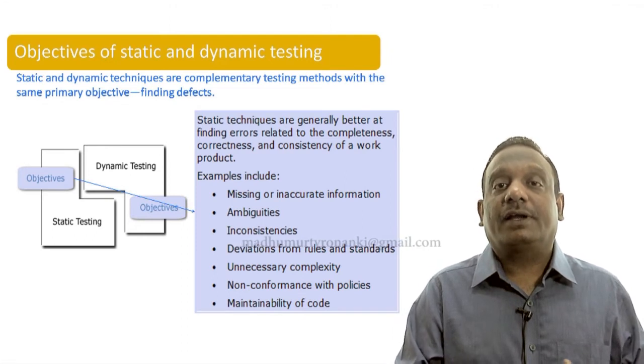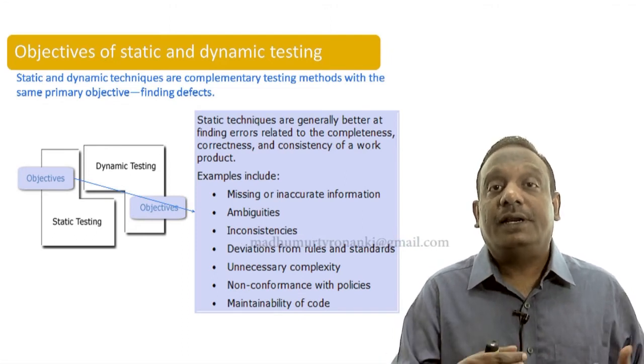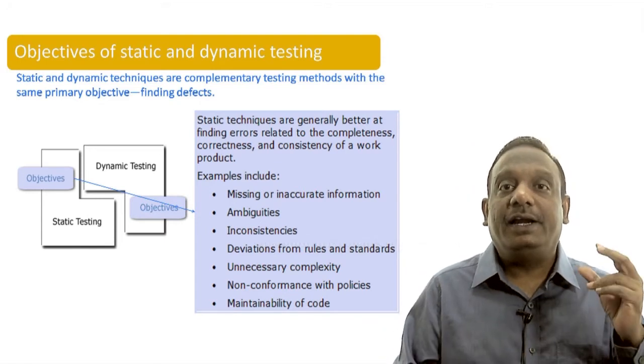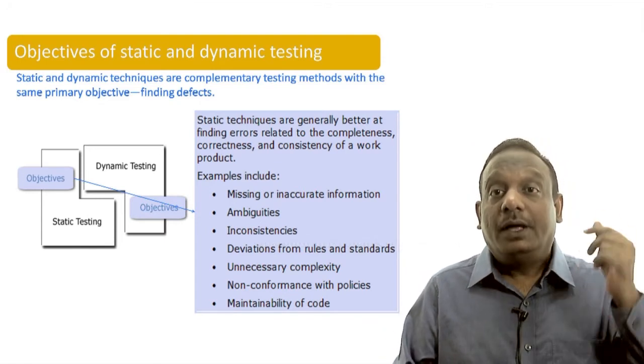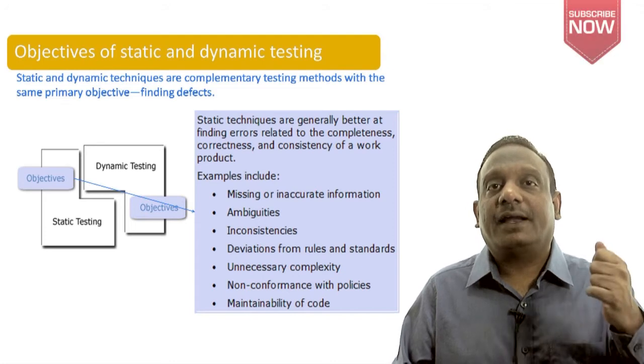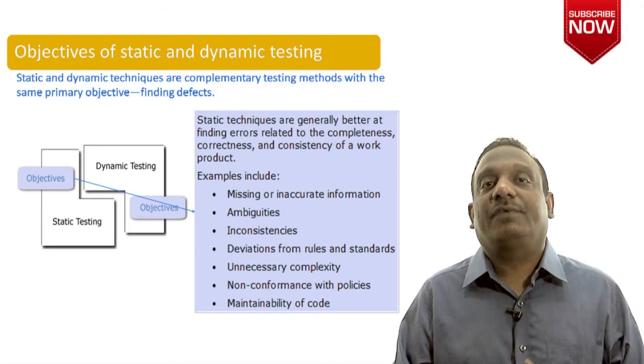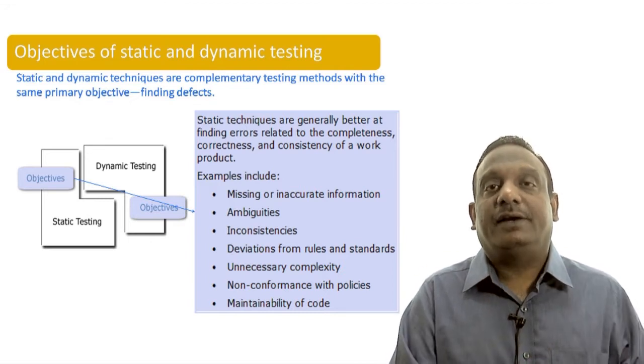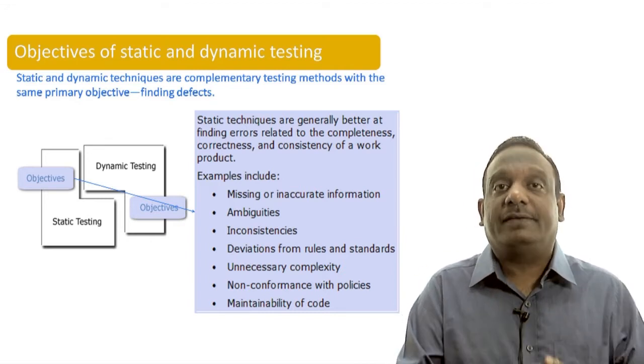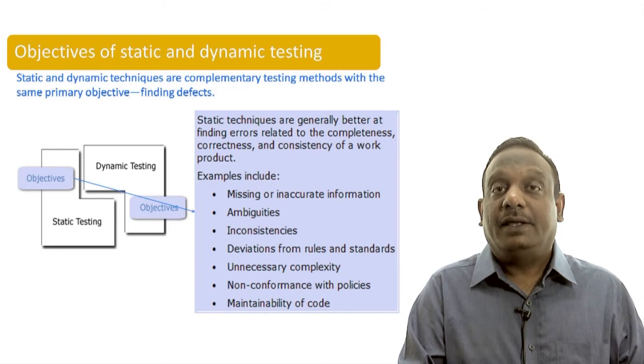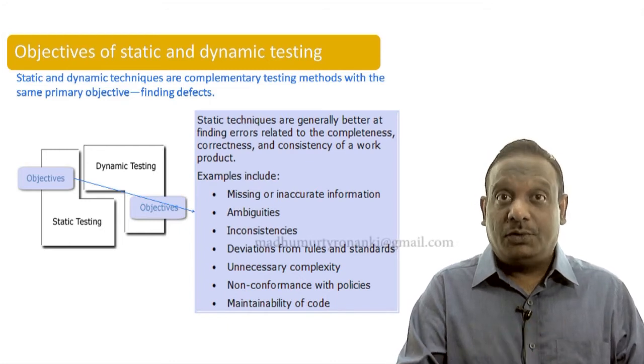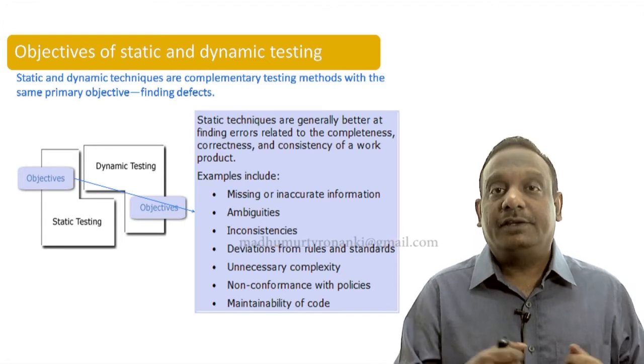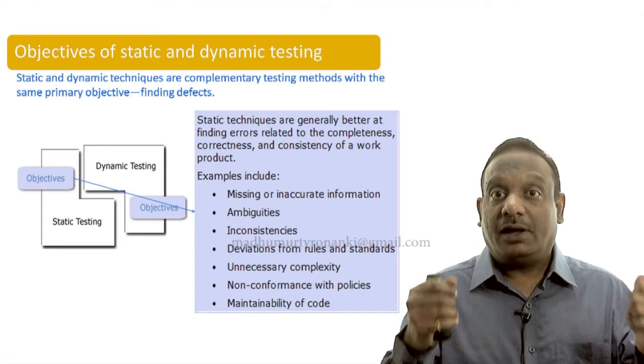In static testing, what kind of defects generally we find? Static techniques are generally better at finding errors related to the completeness, correctness and consistency of our product because these are always captured inside a document. If the document doesn't have those elements, they can only be reviewed by intelligent people and we can take them out. That is why static techniques are very useful.